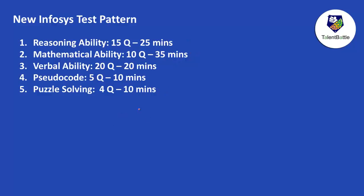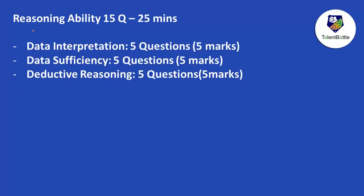In the first section — reasoning ability — there will be 15 questions and 25 minutes. These 15 questions are divided majorly among three topics: data interpretation, data sufficiency, and deductive reasoning — each having 5 questions for 5 marks. As you can see, they are providing more than 1 minute per question, so the level of difficulty is going to be medium to hard.